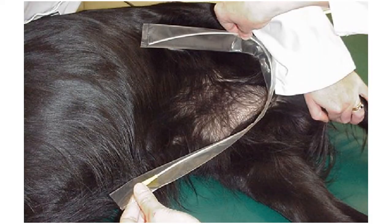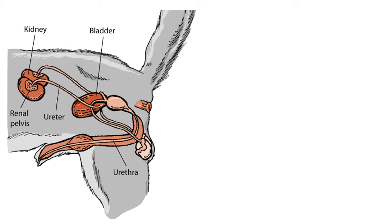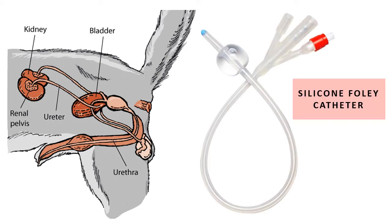If you expect the bladder to be empty, you may pre-measure the catheter to identify how far you need to push it in until the tip reaches the bladder. For dogs, you would need to use a long urinary catheter — either a silicone Foley if you need continuous urine drainage, or a simple red rubber catheter if you just need a urine sample or to help drain the bladder.